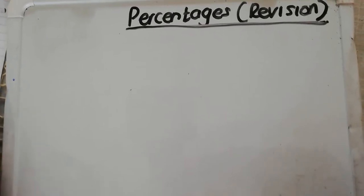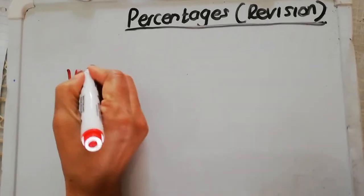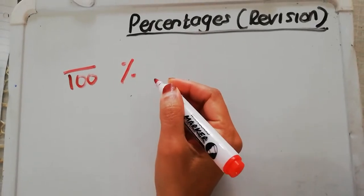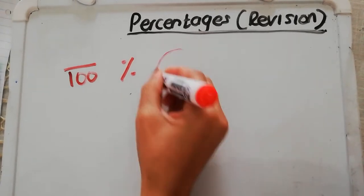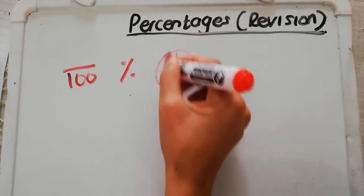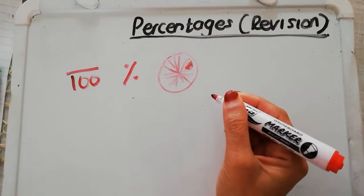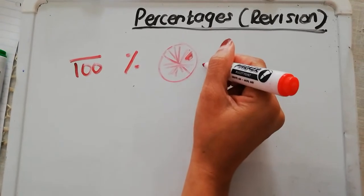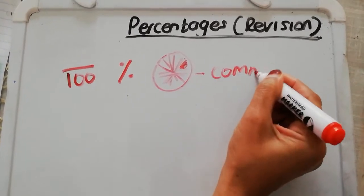To remind you, a percentage is a special fraction where the denominator is always 100. We use this sign to denote that we are talking about percentages. In other words, it's like having a pizza and dividing it to 100 pieces and taking a share of that. A percentage can also be like a common fraction. They are linked.